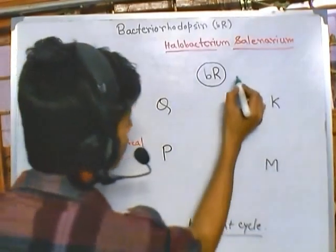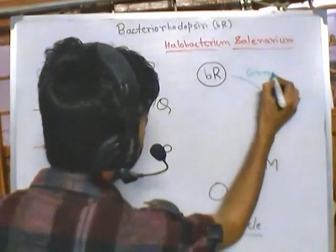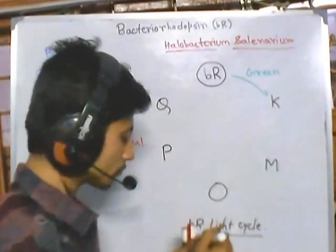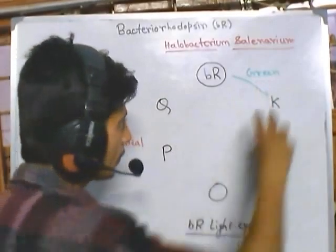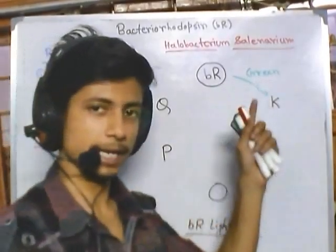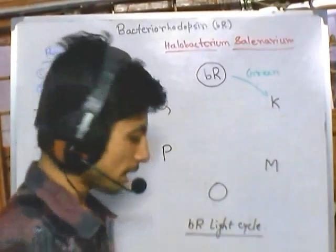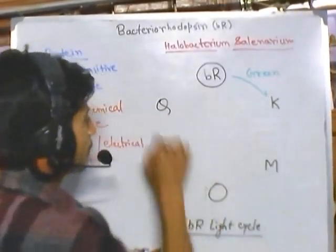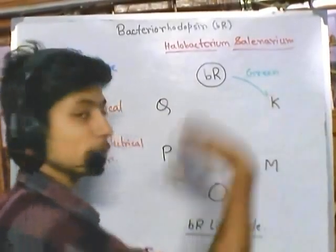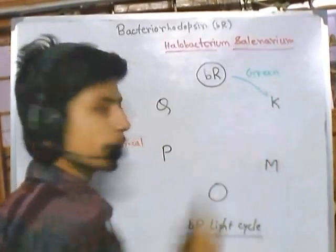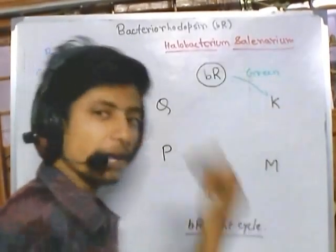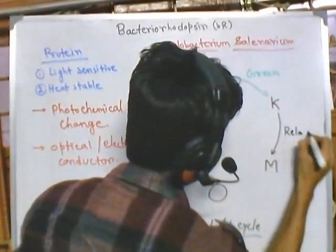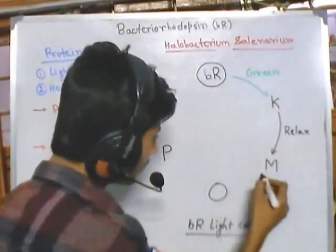At the very beginning, if it receives green light, it changes its structure into what is called the K form. From the K form, it then relaxes into the M form — each structure represents a different conformation: K form is different, M form is different, O form is different. So it first gets excited to K form, then relaxes to M form. From the M form it further relaxes into the O form.